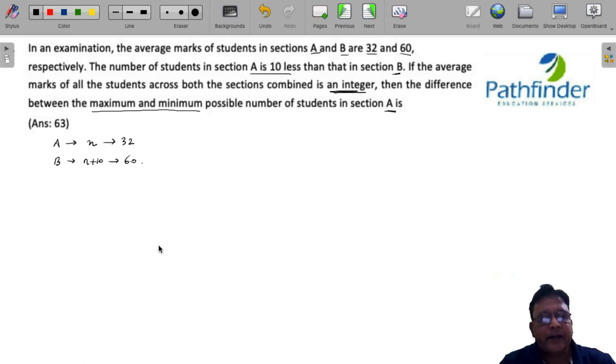What is the combined average of all of them? If you calculate the combined average of all of them, you will get 32 times N plus 60 times N plus 10 upon N plus N plus 10, that is 2N plus 10.